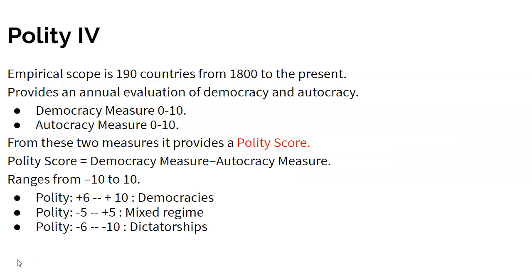Polity IV is a little different — you can be a mixed regime. There are democracies, dictatorships, and mixed regimes. It's created by producing a democracy score from 0 to 10 and an autocracy score from 0 to 10. The polity score is the autocracy score subtracted from the democracy score, meaning countries can range from minus 10 to plus 10. Somewhat arbitrarily, democracies are classified as any regime falling between plus 6 and plus 10, dictatorships between minus 6 and minus 10, and minus 5 to plus 5 is qualified as a mixed regime.